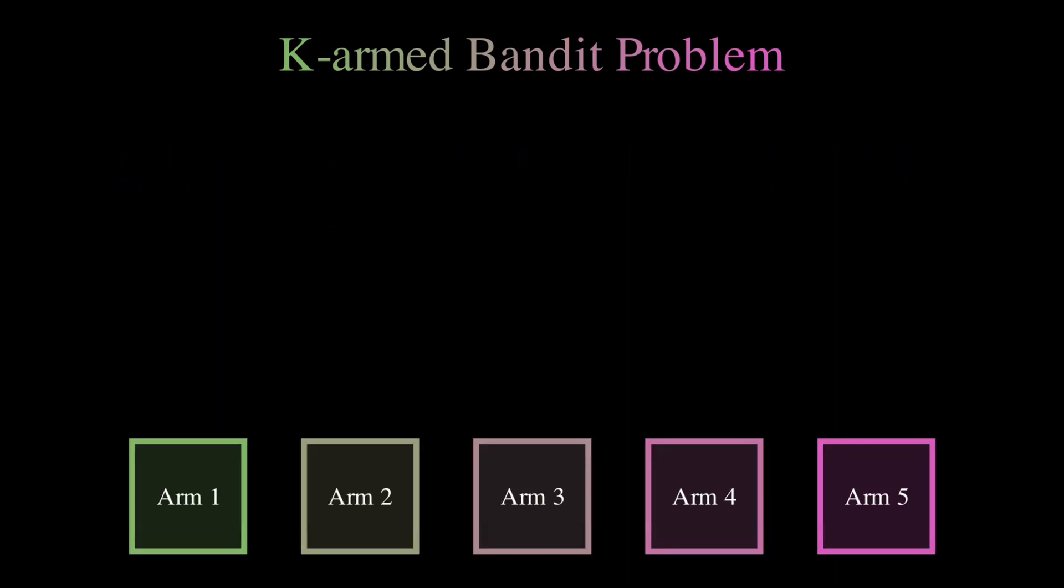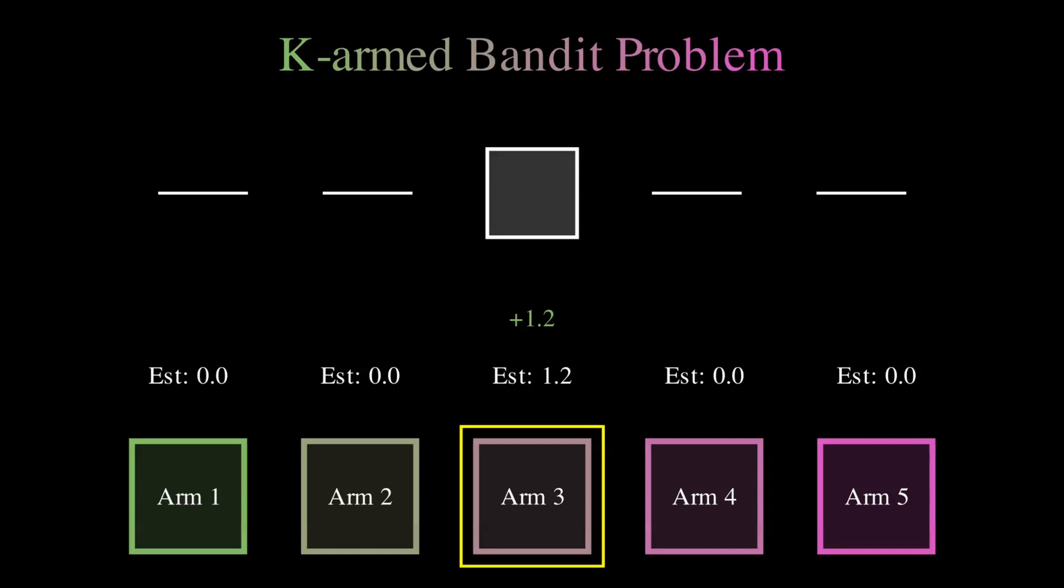We are going to imagine that we are in a casino and we are faced with multiple slot machines. You can think that each one of these slot machines has an arm that we can pull, and when we pull this arm, we obtain a reward. And the question here is that you have to decide which machine to play to maximize your winnings over time. In our context, each slot machine or arm simply represents a stock, and by selecting an arm, you're essentially deciding to invest in that stock, with the hope that its payout or profit will be high.